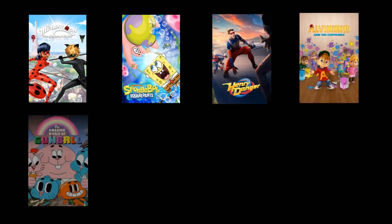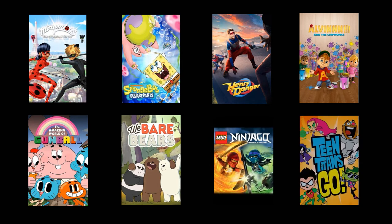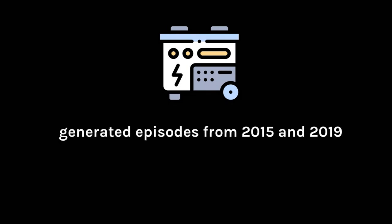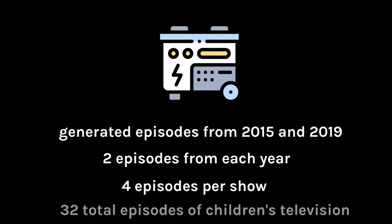The shows analyzed were Miraculous: Tales of Ladybug and Cat Noir, SpongeBob SquarePants, Henry Danger, Alvin and the Chipmunks, The Amazing World of Gumball, We Bare Bears, Ninjago: Masters of Spinjitzu, and Teen Titans Go! From these shows, a random number generator was used to select which episodes would be analyzed from their 2015 and 2019 seasons to ensure no bias. Two episodes were chosen from each year, making for a total of four episodes per show and 32 episodes of children's television coded and analyzed in total.